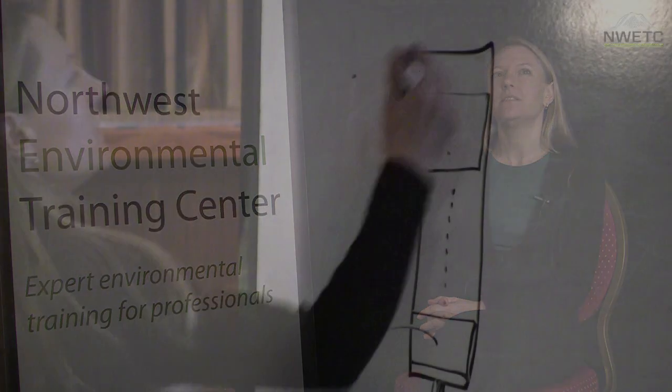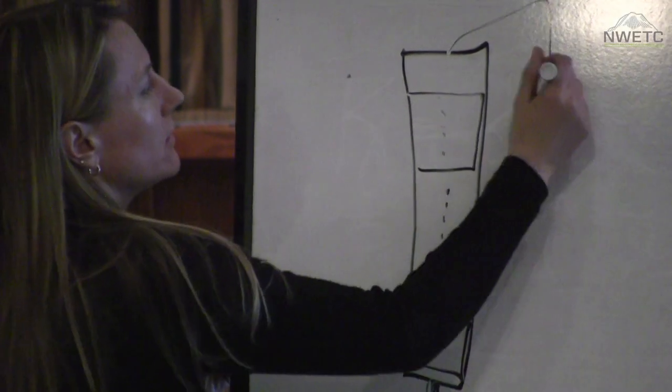I'm teaching an environmental chemistry course and one of my goals in the class is to provide people with a sense of — when they hear of a certain compound — that they can immediately have some idea of what that structure is, how that compound behaves, and whether or not that might be an issue in an environmental system like groundwater or surface water.